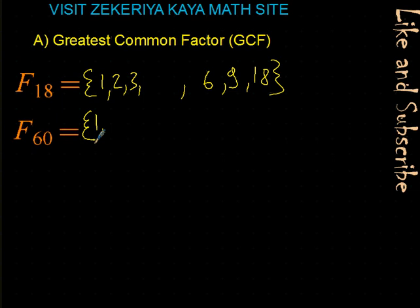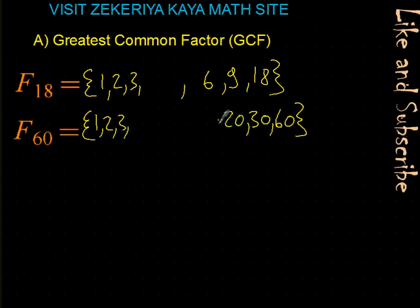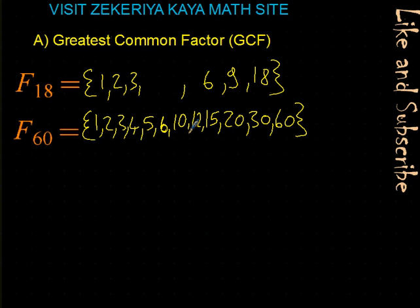Factors of 60: 1 times 60, 2 times 30, 3 times 20, 4 times 15, 5 times 12, 6 times 10. After 6, we check 7 — no natural number works. 8 times — no. 9 times — no. When we check 10, it repeats the earlier pairs. So the factors of 60 are: 1, 2, 3, 4, 5, 6, 10, 12, 15, 20, 30, and 60.